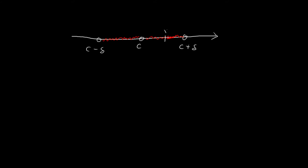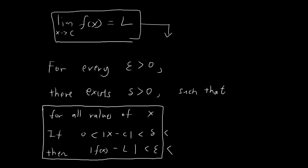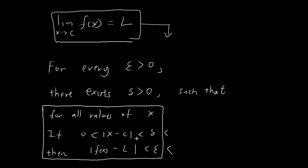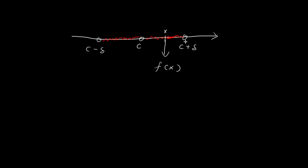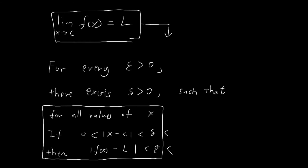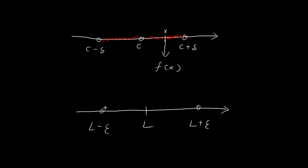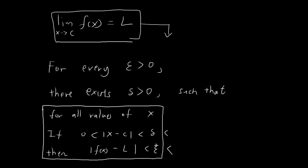So we have a point x that lies within this shaded region, and for this value of x it will be mapped to a corresponding value f of x by the function. The conditional statement says that since x is within a distance of delta away from c, we know that f of x must be at a distance of epsilon away from the value L. On a number line, if this is L, this is L plus epsilon, and this is L minus epsilon, then f of x must lie somewhere within this shaded region — within a distance of epsilon away from L.